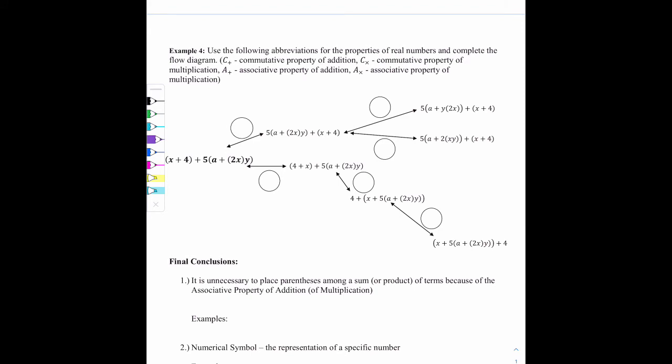So use the following abbreviations for the properties of real numbers and complete the flow diagram. C+ is going to stand for the commutative property of addition. C with the small x, the x is standing for multiplication. So commutative property of multiplication. A+ would be associative property of addition. And A× is the associative property of multiplication. The mathematical part of the proof, again, has already been done for us. And we're going to use this part as our starting point. As you can see, it's bolded. And it's our job to put in what property was used to get around the flow chart.